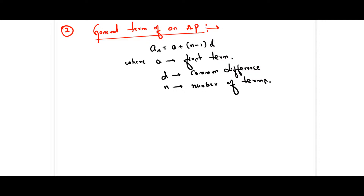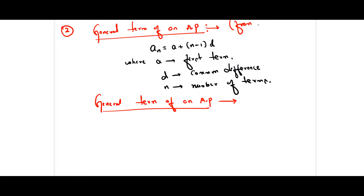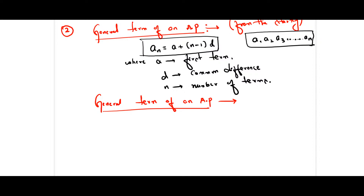Now if they ask you to write the general term of an AP, and you are writing from the starting term — A1, A2, A3 up to AN — then the general term formula is: AN equals A plus (N minus 1) into D. Here A1 is the first term, A2 is the second term, A3 is the third term, and AN is the last term.